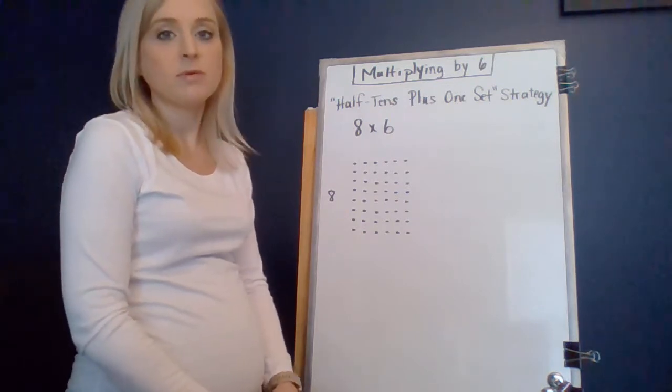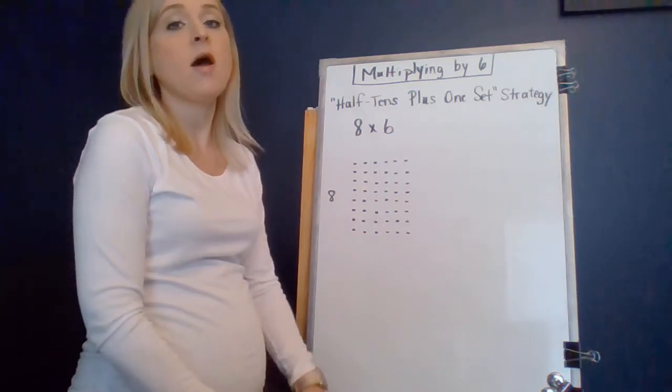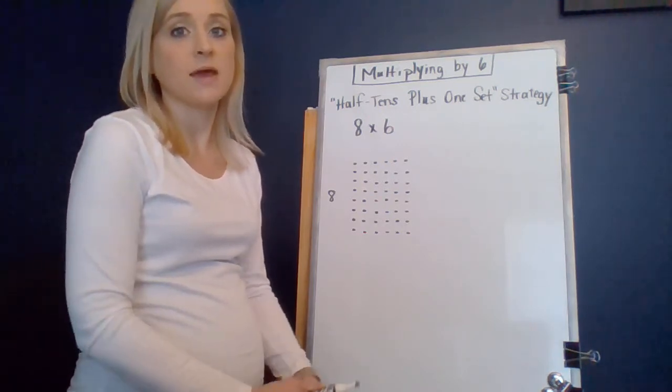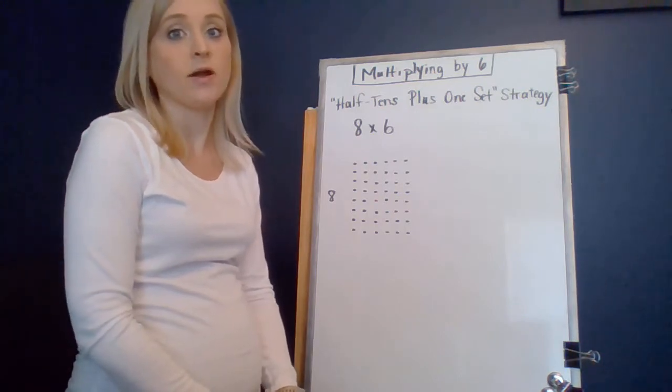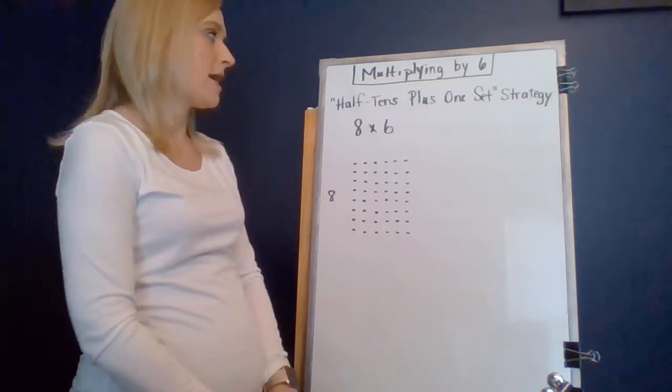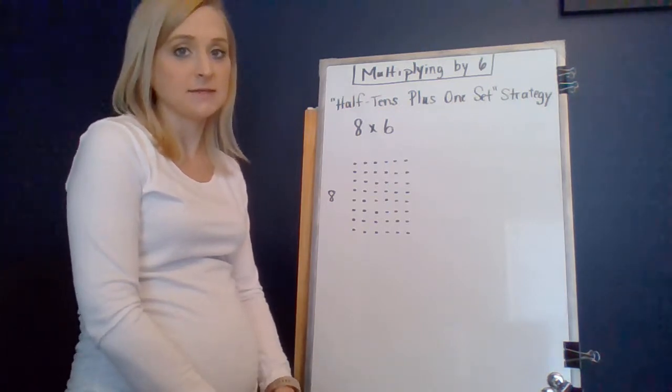If you remember from last week, I introduced or reviewed a strategy with you to find basic facts multiplying by 5. That was called the half 10 strategy, or 5 is half a 10 strategy. We're going to play off of that today to multiply basic facts by 6.